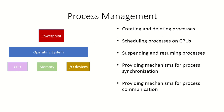One of the major tasks of the operating system is process management. What exactly is done by the OS in process management? The first task is creation and deletion of processes. Whenever a process is created, many data structures are associated with that process — that accounts for the creation of the process. Once the process has finished its execution, the resources and all associated data structures are taken away from it, leading to the deletion of the process.